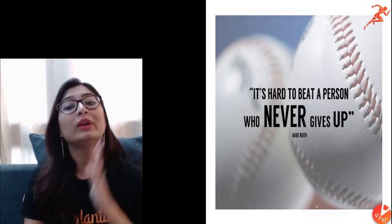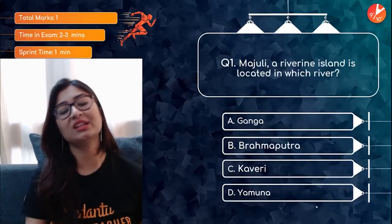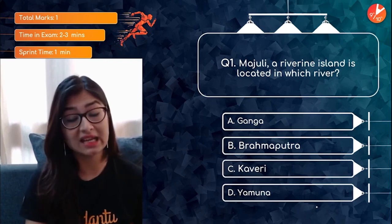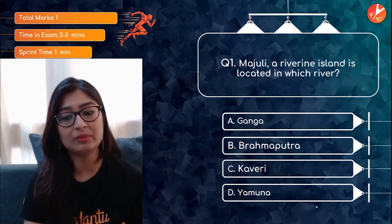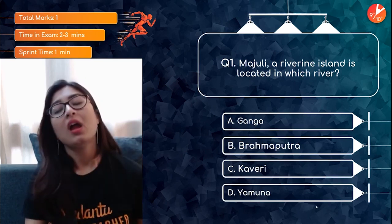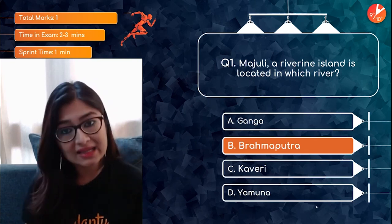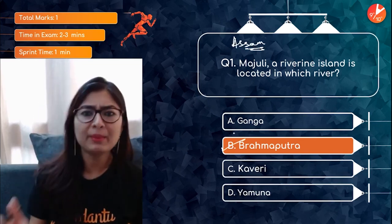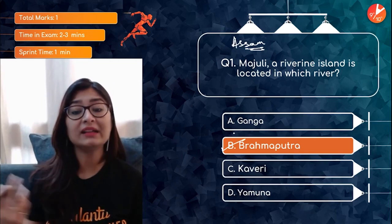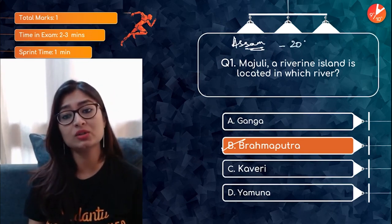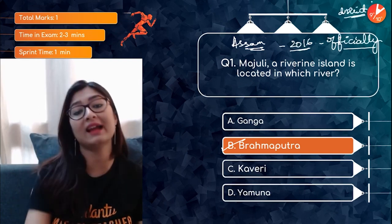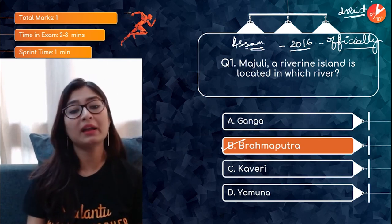Our first question: Majuli, a riverine island, is located in which river — Ganga, Brahmaputra, Kaveri, or Yamuna? The answer is Brahmaputra, because this island is located in Assam, and the Brahmaputra river flows through Assam. One interesting fact: in 2016, Majuli was officially declared a district — the first island in India to be declared a district.